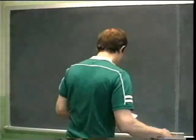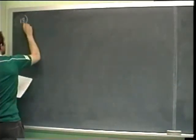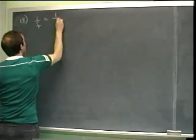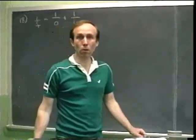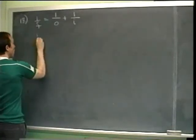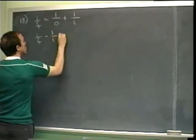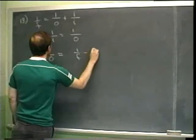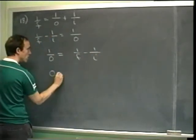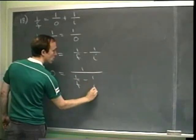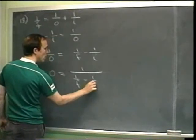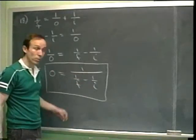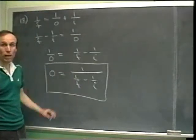Problem number 18: solve for o — they specify it's the letter o, not the symbol zero. They write 1 over f equals 1 over o plus 1 over i. Get 1 over o all by itself and then take the reciprocal. Subtract 1 over i from both sides, switch sides, then take the reciprocal of both sides. That's as simple as it gets — it's the reciprocal of the whole expression; I can't write it as f minus i. It doesn't simplify any further.